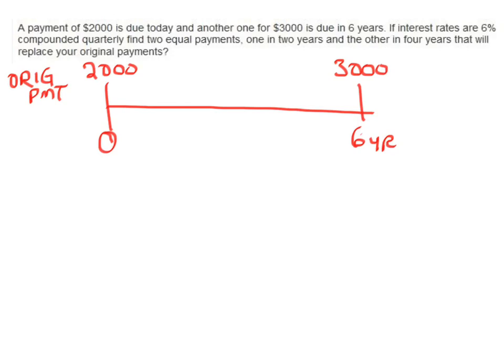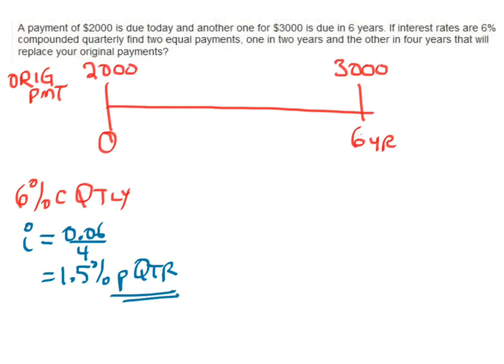Interest rates are 6% compounded quarterly. So 6% compounded quarterly means we've got 6% calculated four times a year. The interest rate per quarter is 0.06 divided by 4, or 1.5% per quarter. This is very important: i = 1.5% per quarter.